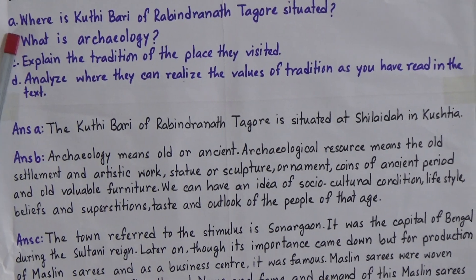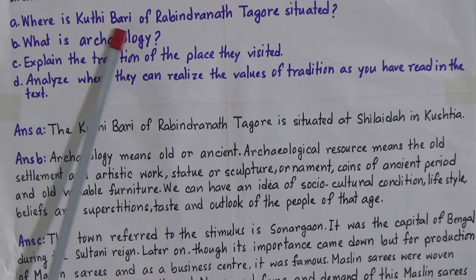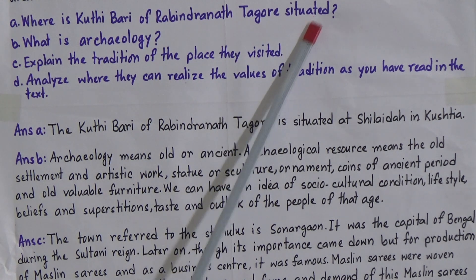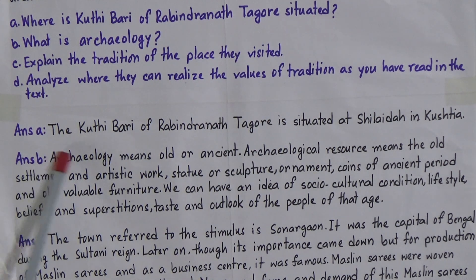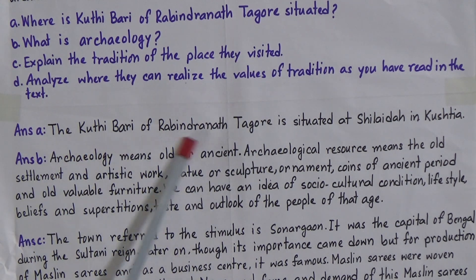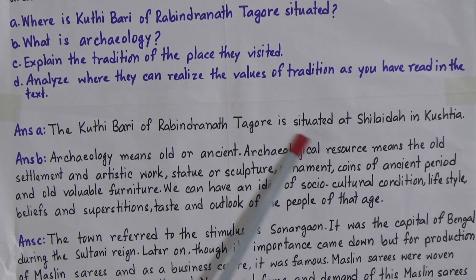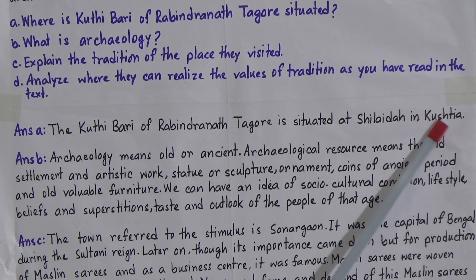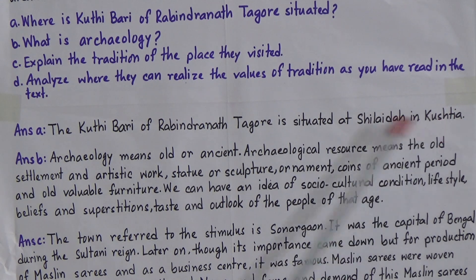Sample answer — Number A: Where is Kuthibari of Rabindranath Tagore situated? The answer is: The Kuthibari of Rabindranath Tagore is situated at Shilaidaha in Kustia.